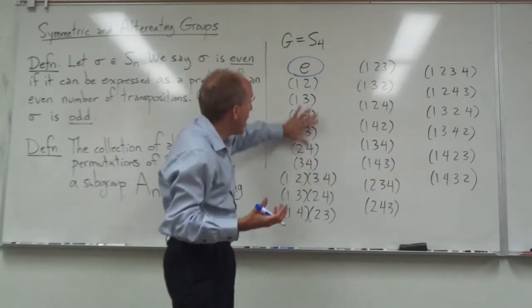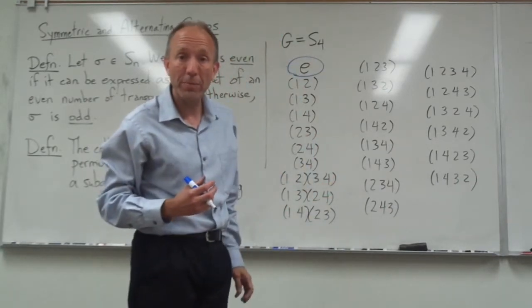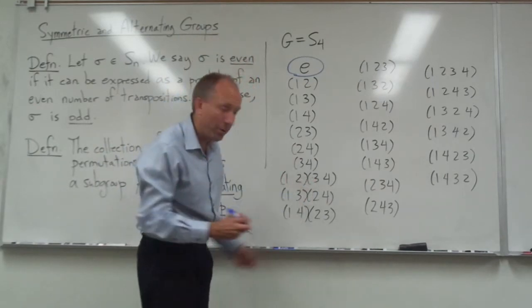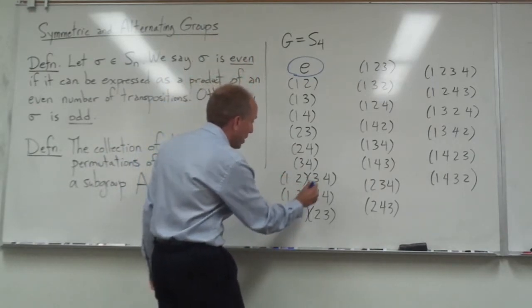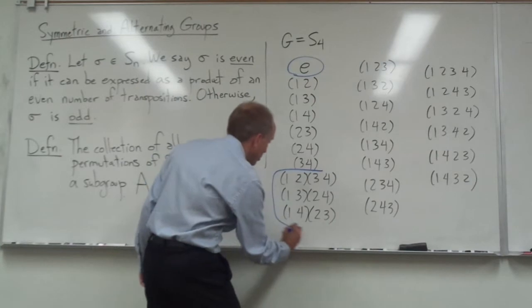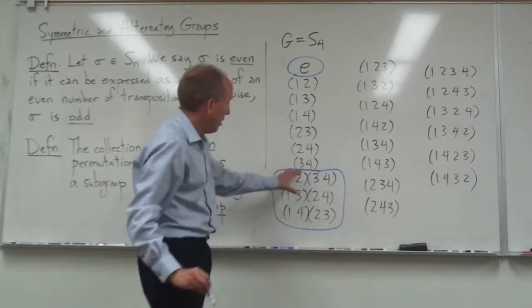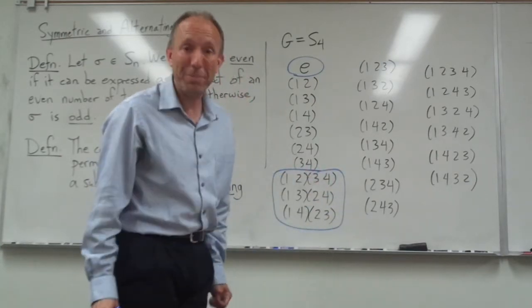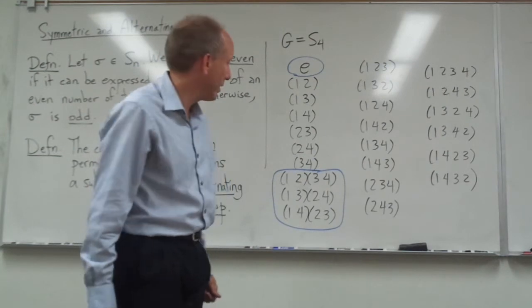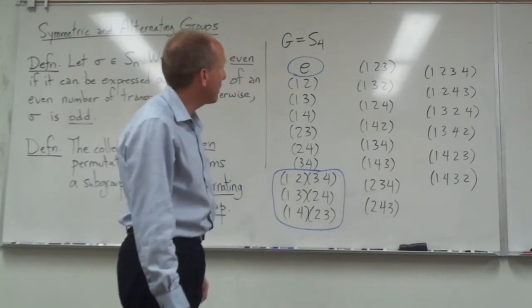So those elements are not part of A4. The three at the bottom, however, consists of products of two transpositions. And so those guys are going to be part of A4. Two disjoint transpositions there.